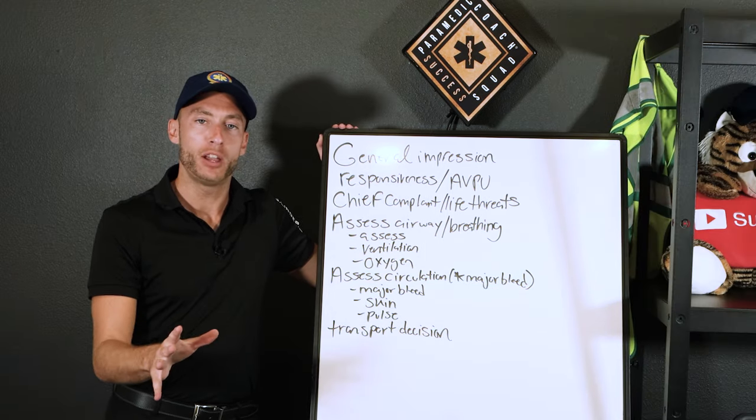Now we're into history taking and secondary assessment. We've taken care of primary life threats and are getting more detailed while preparing the patient for transport — or we may already be transporting. Visualize: who are you getting the history from? Is the patient able to give a history? If they're unresponsive with an OPA, is there someone on scene? Is there a first responder going in to look for a medical history? You've got two key mnemonics to know: OPQRST and SAMPLE.